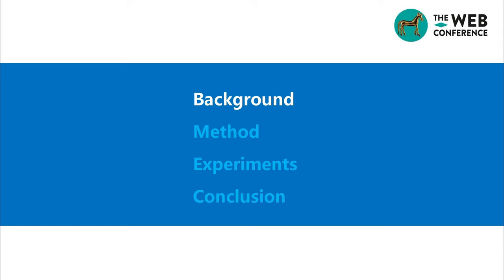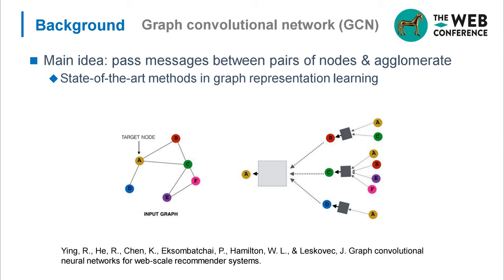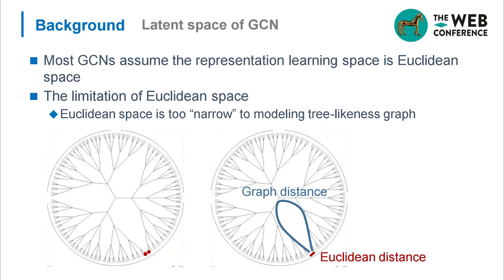Let's begin from the background. Graph Convolutional Networks are a key method in graph representation learning. Most GCNs learn node representations in Euclidean space, but that could have large distortion when embedding graphs with scale-free or hierarchical structure. If we want to measure two points in the left figure, the Euclidean distance of the two points is shorter than the graph distance.